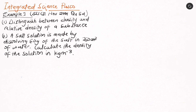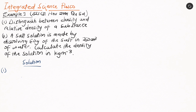We are to distinguish between density and relative density of a substance. A solution is made by dissolving 50 grams of salt in 250 cm³ of water, and we are to calculate the density of the solution in kilograms per meter cube. So the density of a substance is the ratio of its mass to its volume — the mass of the substance to the volume of the substance.